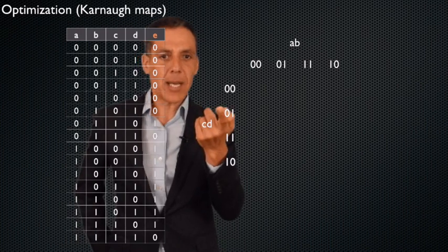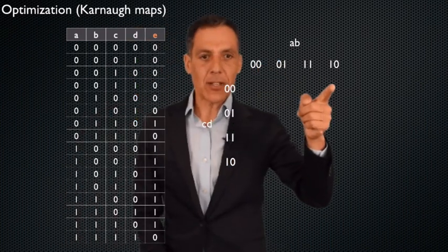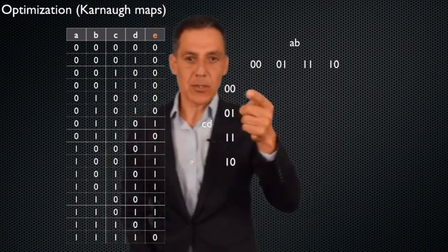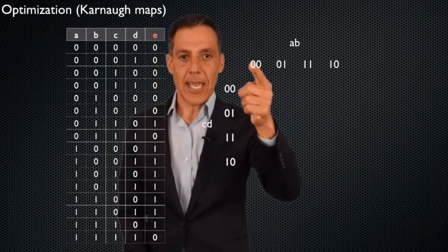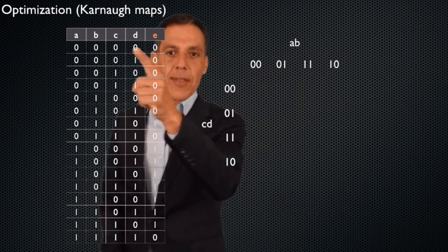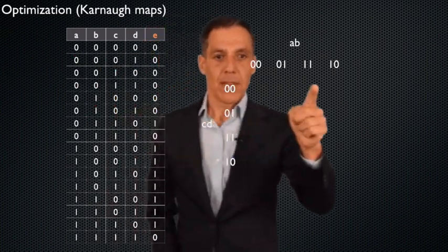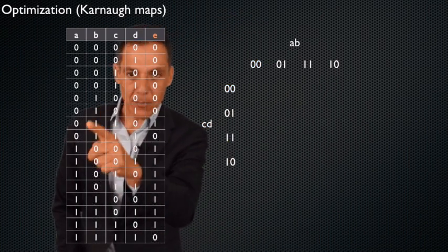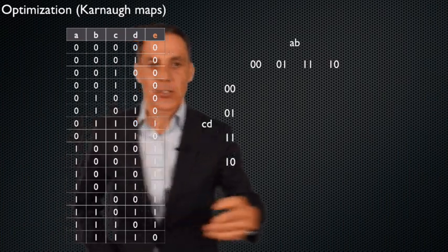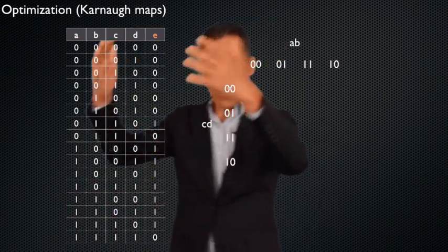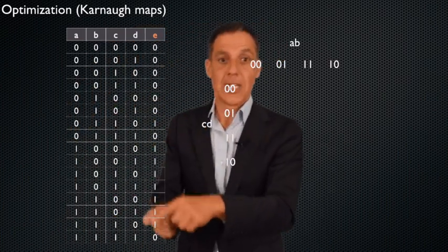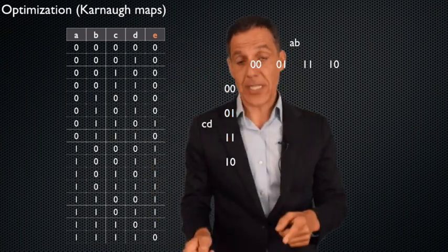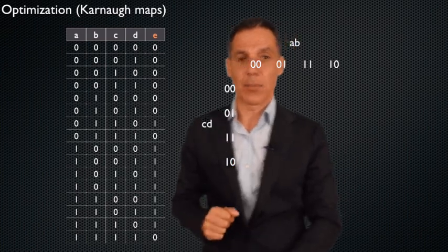So it's simply a different visualization of the standard truth table. To populate it, for any cell I know what row it corresponds to. For example, this cell is A zero, B zero, C zero, D zero — that's that row right there. This cell is A one, B zero, C zero, D zero — so that must be this one right here. There is a direct translation: every row's output gets placed into the corresponding cell. I need a different one of these for each output; this map is for only one output.